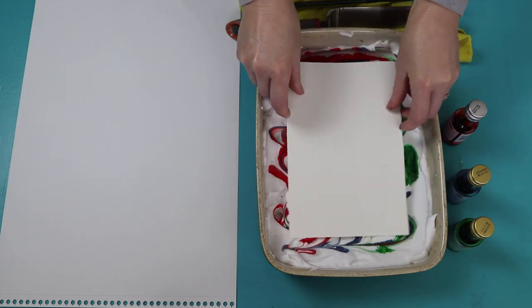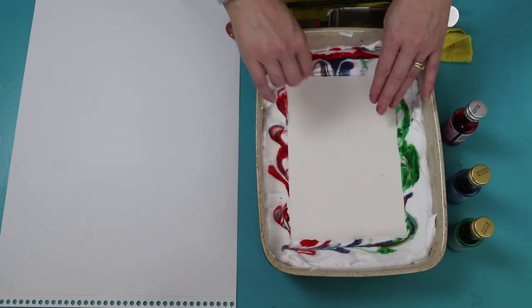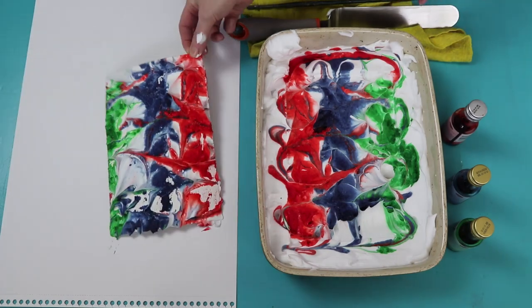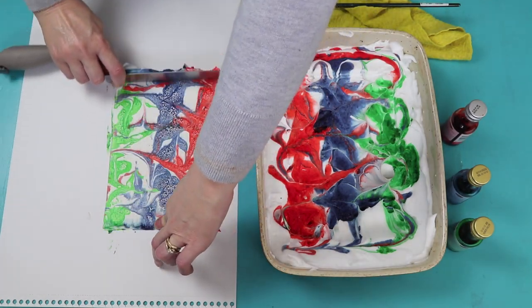Now lay a sheet of paper on top of the foam and leave for about 20-30 seconds. Take the paper out and use the spatula or a window squeegee to remove the excess foam.